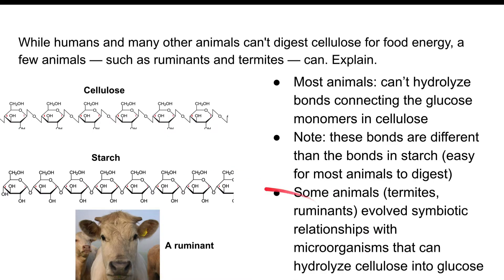There are a couple of animals such as termites and ruminants — ruminants include cows, sheep, goats, deer, and other mammals — that evolved symbiotic relationships with microorganisms that can hydrolyze those bonds in cellulose, breaking them and releasing glucose monomers, making food energy available.